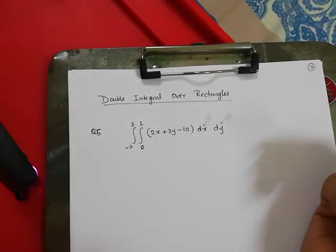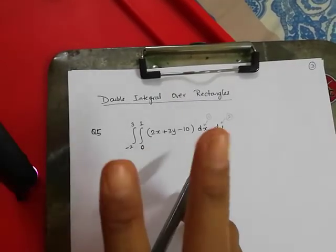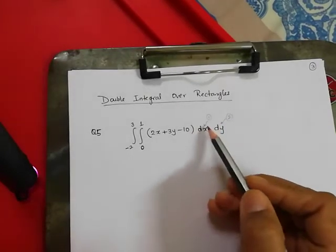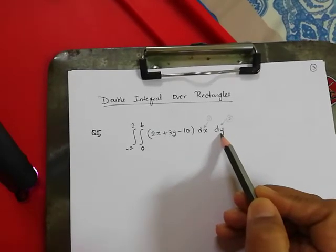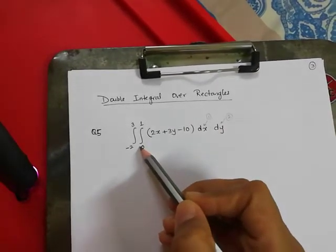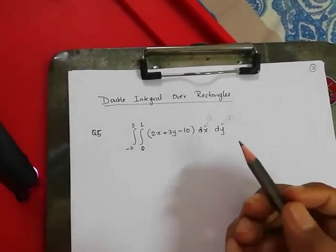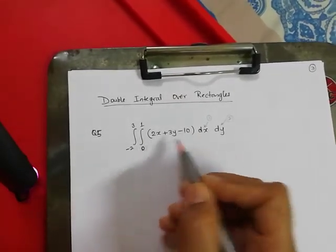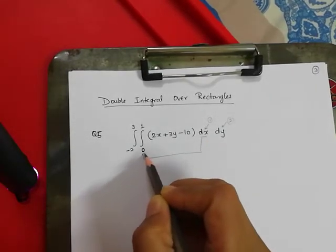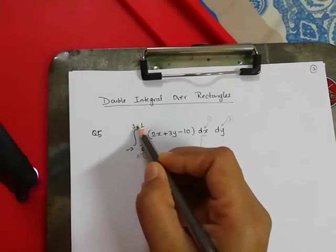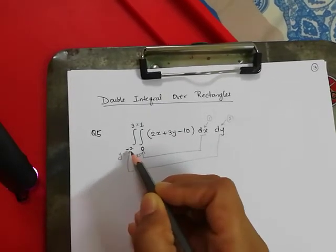We are solving this double integral as an iterated integral, meaning we integrate two times, one after another. First we integrate with respect to x, and then the resulting answer we integrate with respect to y. Now, how do we know that the limits 0 to 1 are for x or y? Since we started integrating with x, the inner limits are for x — so x varies from 0 to 1 — and the outer limits are for y, so y varies from minus 2 to 3.